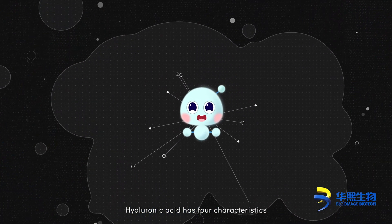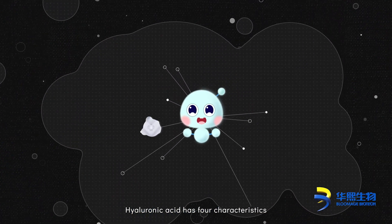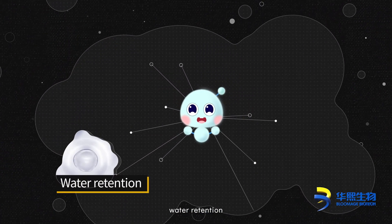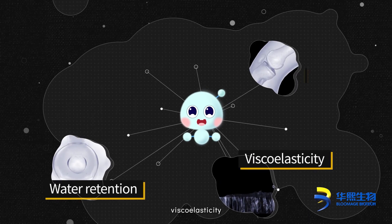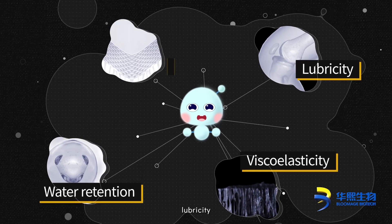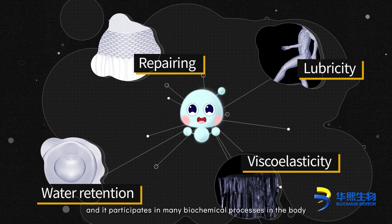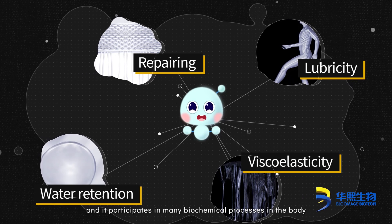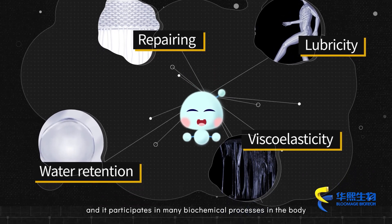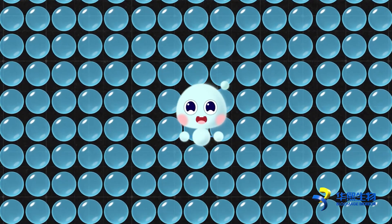Hyaluronic acid has four characteristics: water retention, viscoelasticity, lubricity, and repairing, and it participates in many biochemical processes in the body.